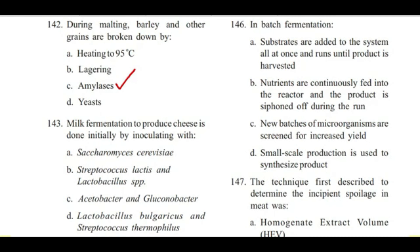Question 143: Milk fermentation to produce cheese is done initially by inoculating with — Saccharomyces, Streptococcus lactis and Lactobacillus species, Acetobacter and Gluconobacter, or Lactobacillus bulgaricus and Streptococcus thermophilus? Answer is D, Lactobacillus bulgaricus and Streptococcus thermophilus.